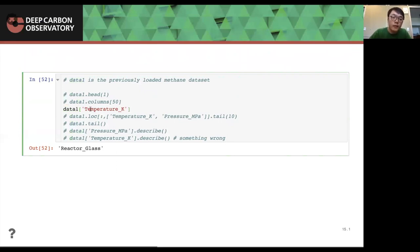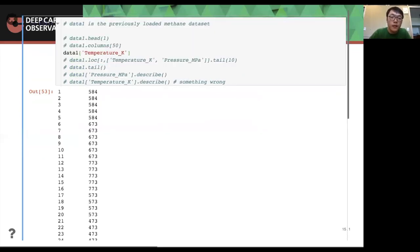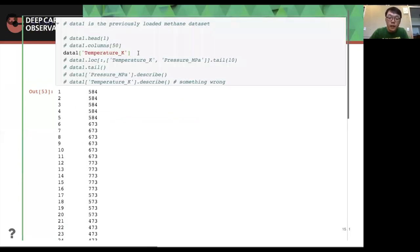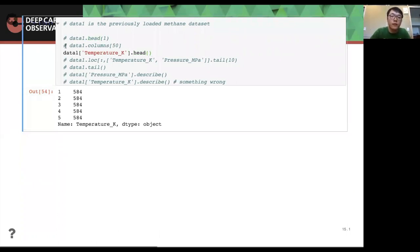It's let's say if you want to show the 50th, the 50 thing, it will say it will tell you that is the reactor glass is one parameter in the data table. And also you can take a look at like, let's say the temperature column, it will show you the whole temperature column. And also you can use the head function in here. It will show you the top five rows of the temperature column. And then if you want to select more than one column, you can use dot log function.